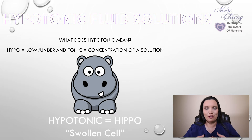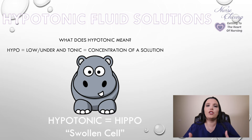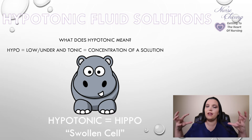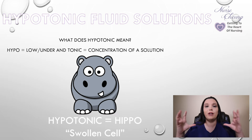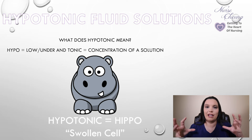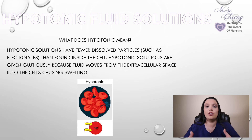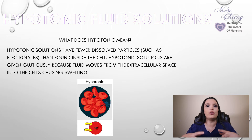Let's move on to hypotonic solutions. Hypo means low or under, and tonic means concentration of a solution. An easy way to remember this is to think of 'hypo' as 'hippo' — a big glorious hippopotamus — meaning the cells are going to get very swollen. Hypotonic solutions have fewer dissolved particles such as electrolytes compared to what's found inside the cell. They are given cautiously because fluid moves from the extracellular space into the cells, causing swelling as the body tries to maintain homeostasis. So remember: hippo, swell, hypotonic.